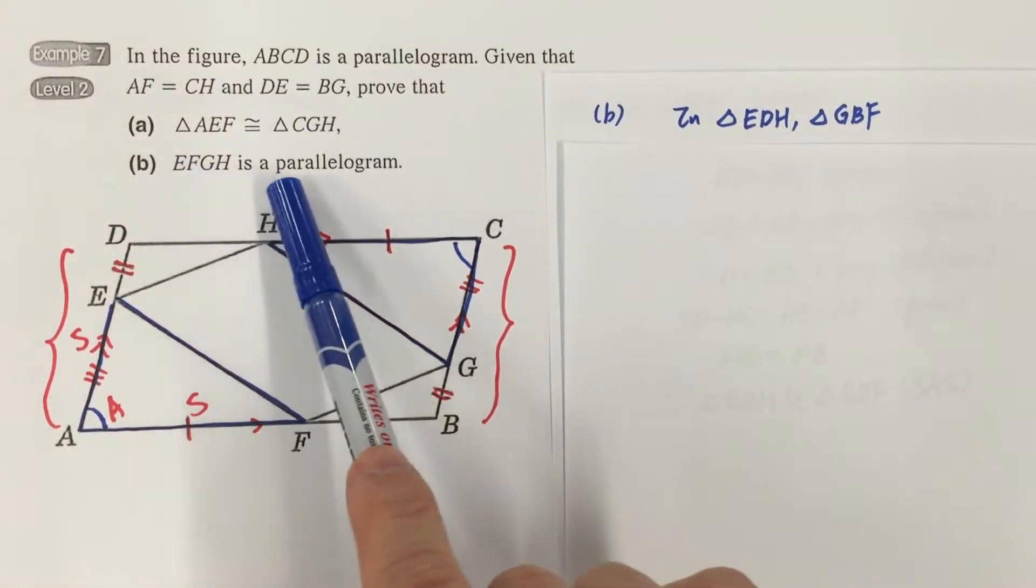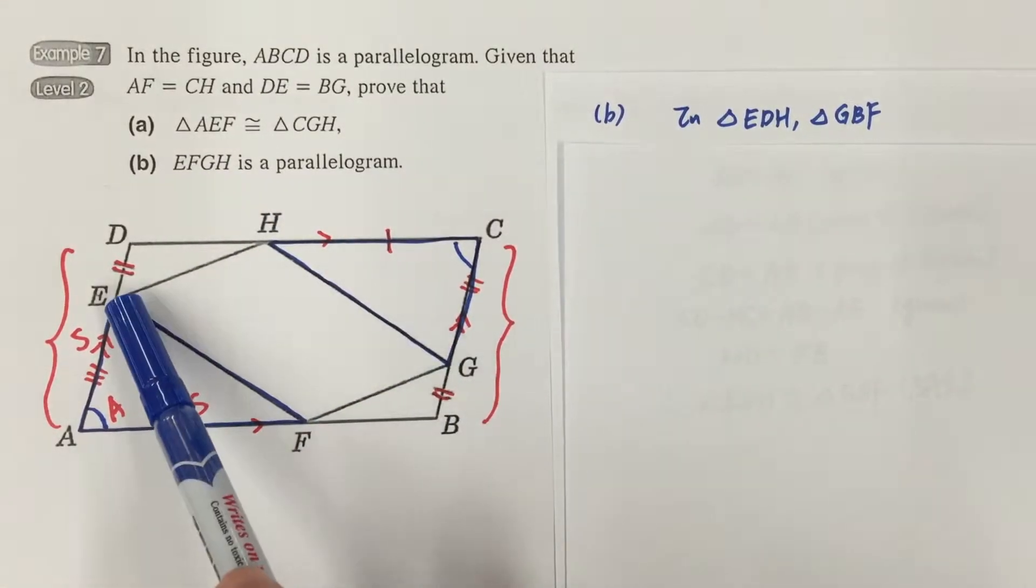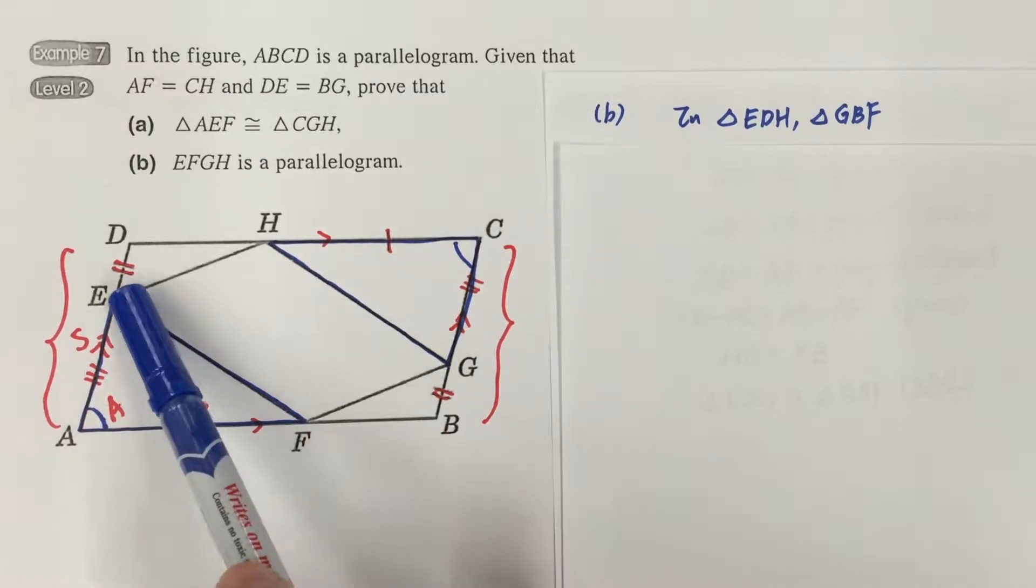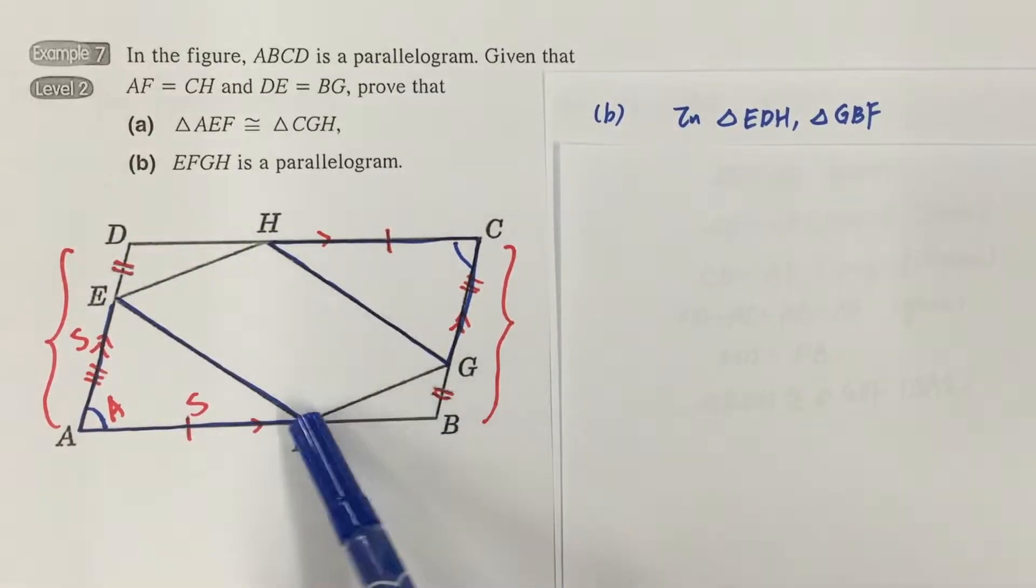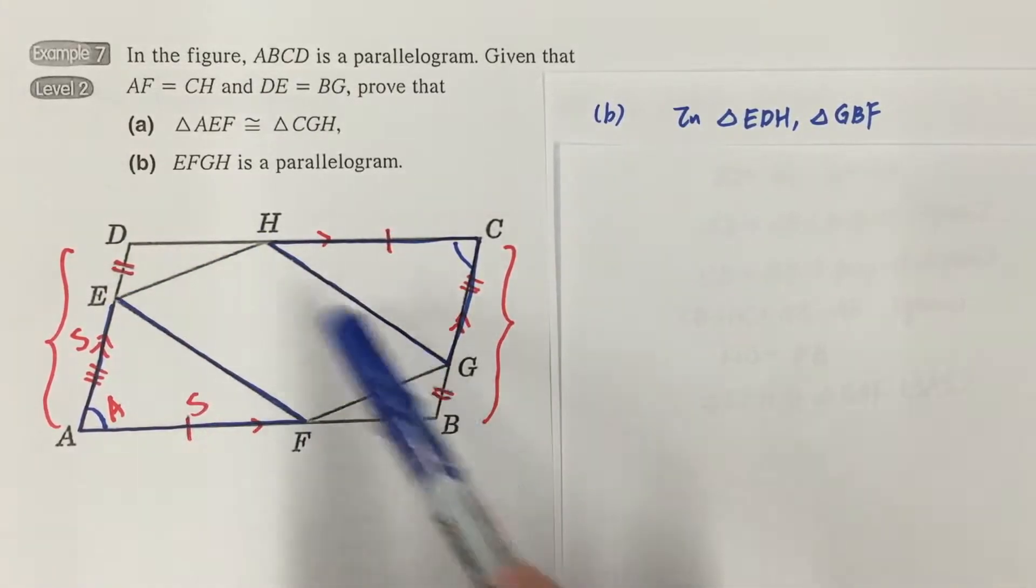Okay, part B. Prove that EFGH is a parallelogram. It is quite obvious that we need to prove another pair of congruent triangles in order to show that EFGH is a parallelogram.